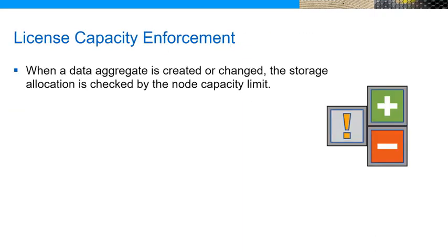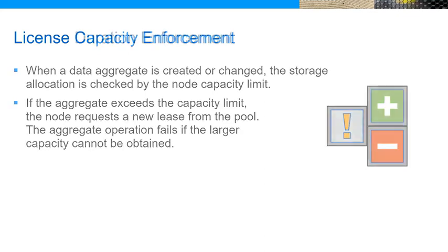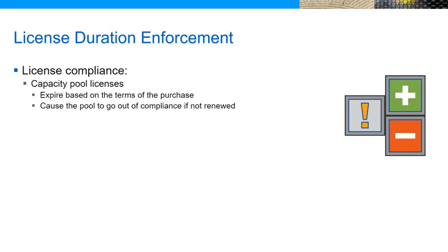Every time ONTAP Select is requested to create or change the size of a data aggregate, the updated storage allocation is tested against the capacity limit of the capacity pool. If the new lease target exceeds the capacity limit of the license, the aggregate operation simply fails without updating the current lease. This approach helps to prevent the aggregate from being left without a capacity lease. A license can expire and go out of compliance in the following situations. The capacity license for a shared capacity pool expires based on the term expiration date. For example, a license might expire after one year. If the capacity pool license is not renewed, then the license goes out of compliance. Any subsequent lease renewal request to the expired license is rejected.